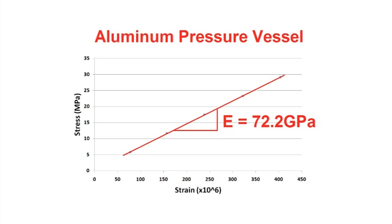The modulus of elasticity calculated this way ought to be fairly close to the published value for the material the cylinder is made from. Aluminum has an elasticity of about 70 gigapascals.